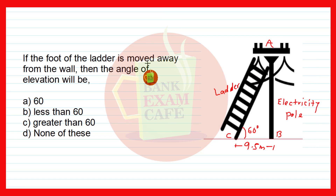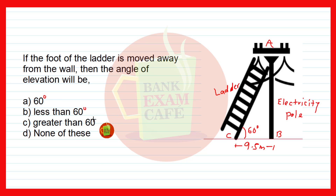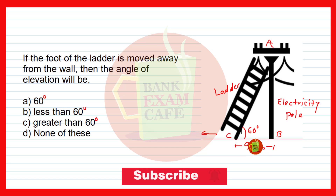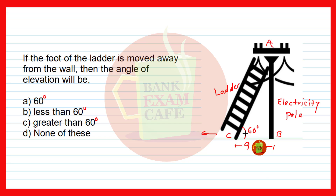The next question asks: if the foot of the ladder is moved away from the pole, will the angle of elevation remain the same at 60 degrees, be less than 60 degrees, be greater than 60 degrees, or none of these? When the foot of the ladder is moved away from the pole, what happens to the angle of elevation? Friends, always remember — when you go away from an object, the angle of elevation decreases.